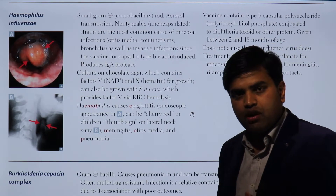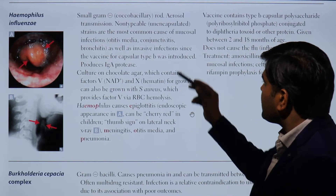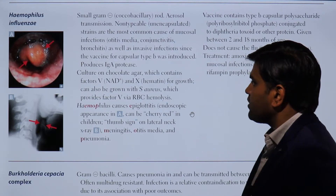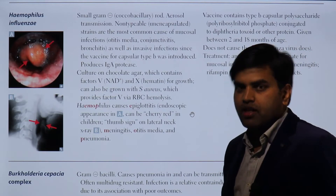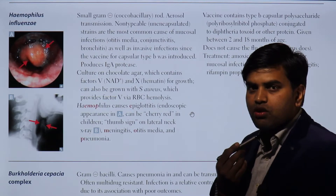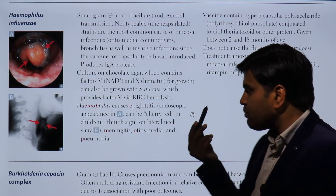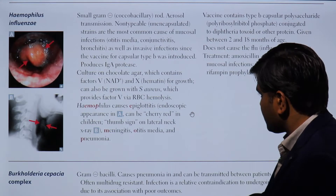The other type is known as type B, or the capsulated strain, which causes invasive infections — mainly epiglottitis, meningitis, and other serious features.